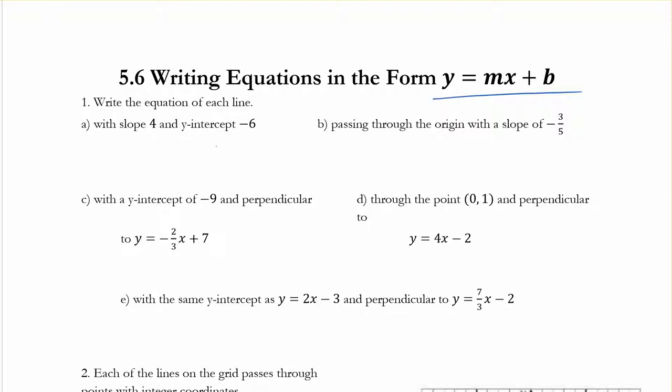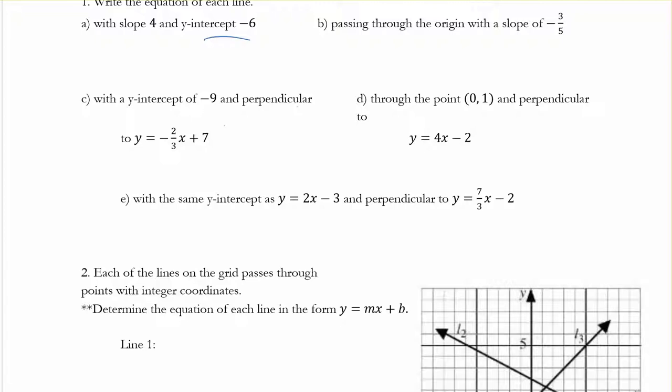Passing through the origin, so that's just 0, 0, right? With an intercept of negative 9 and perpendicular to this equation. Alright, so y-intercept of negative 9, so I'm going to help you with this one.